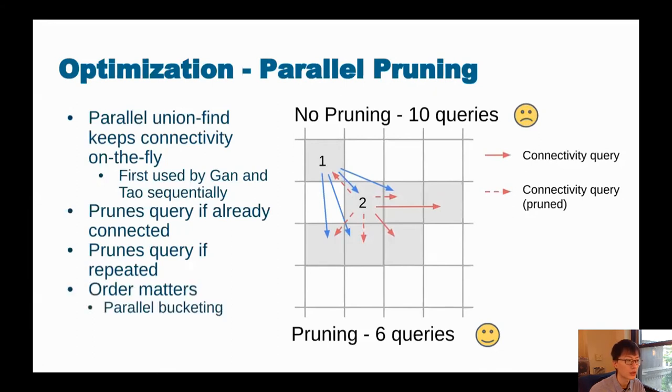Beyond Gan and Tao, we discovered that the order that cell one and cell two carry out these queries also matters. When we swap the order of cell one and cell two, there will be even fewer queries. So we come up with a parallel ordering technique and implement it using a parallel bucketing algorithm.